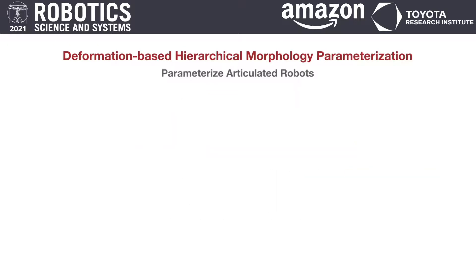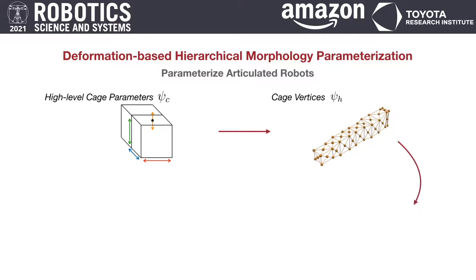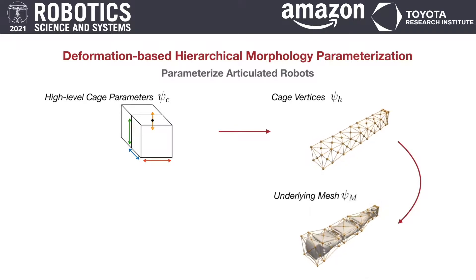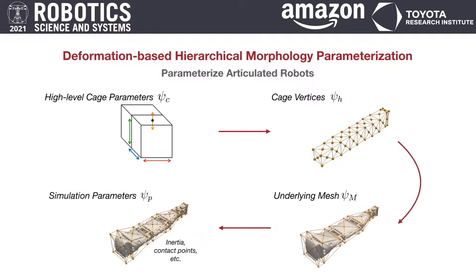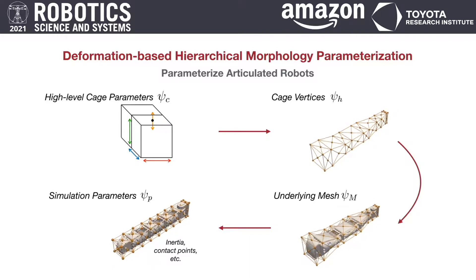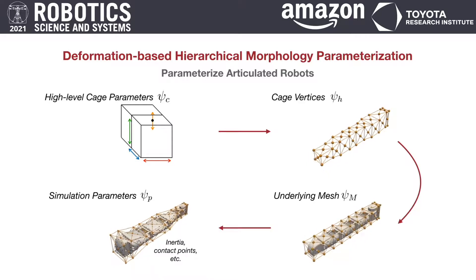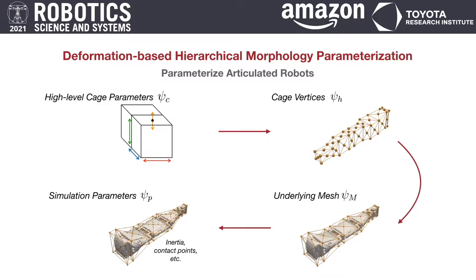Inspired by this, we propose a hierarchical parameterization for articulated robot designs. Starting from a set of high-level cage parameters, our algorithm computes the locations of cage handles. Those cage handles in turn deform the underlying mesh of each component through cage-based deformation. From that, we can calculate the kinematics and dynamics parameters of the robot required by the simulation. Each step here is computationally efficient, analytically differentiable, and also preserving the manufacturability of the design.